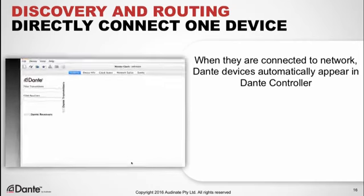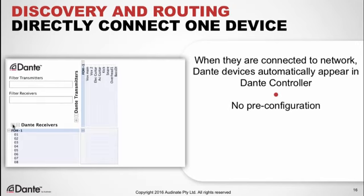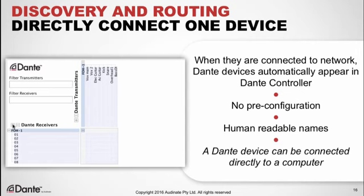When we connect a Dante device directly to our computer, the device simply appears. This brings up a key point about Dante: all devices are self-discovering without pre-configuration. The device shown has human-readable names — we can adjust the device name plus the names of individual channels. A Dante device can simply be connected directly to a computer and be seen in Dante Controller; no switch is necessary for this simple type of connection.